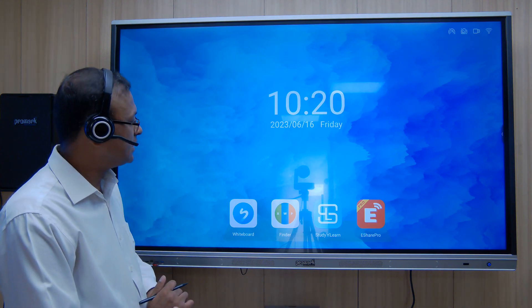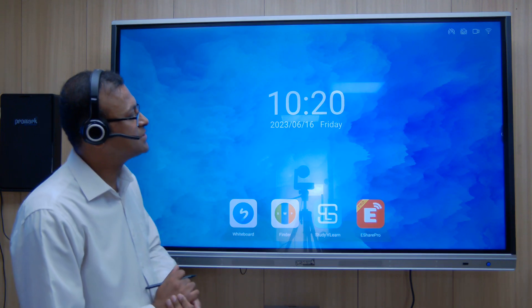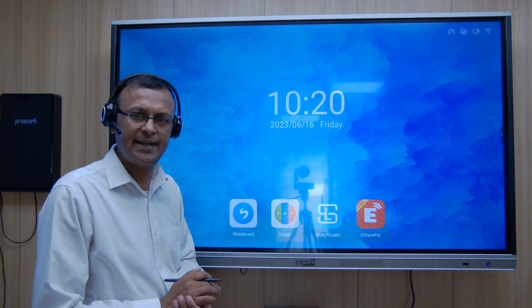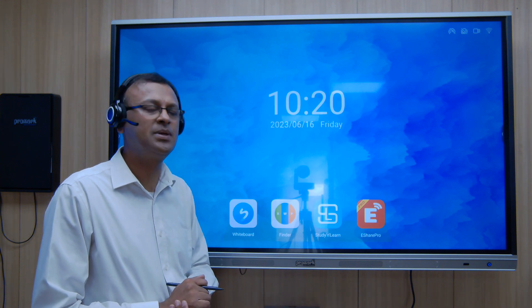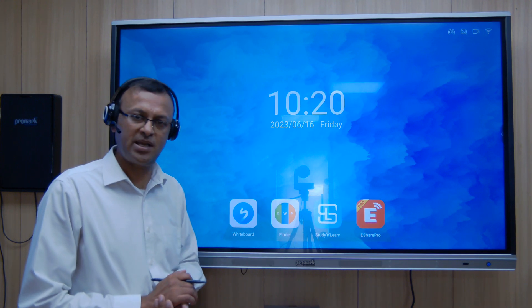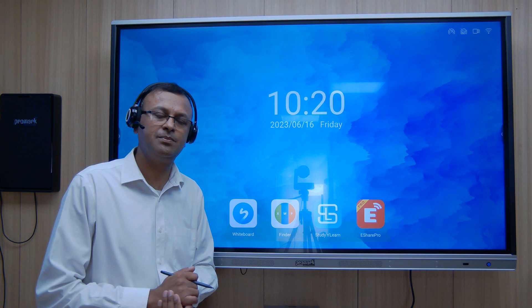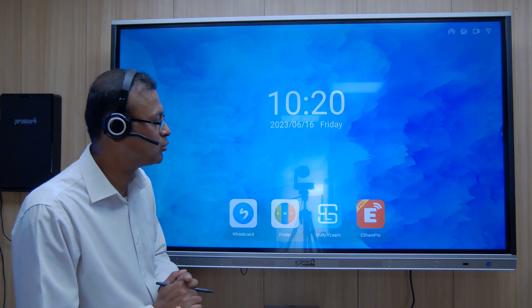And here as you can see, this panel comes with Android 11 version which is the latest, and its configuration is 4GB RAM and 32GB memory which is expandable. That means you can have 32GB more, which is about 64GB in total.